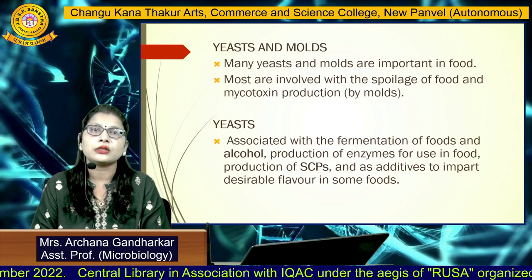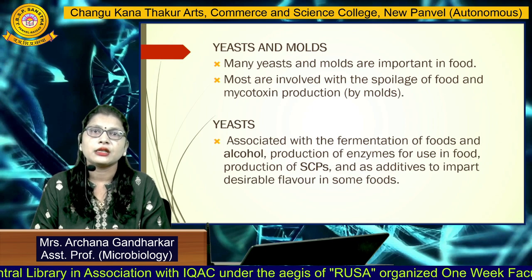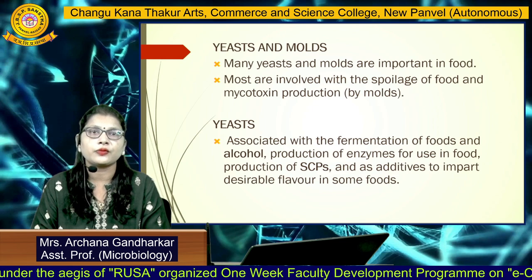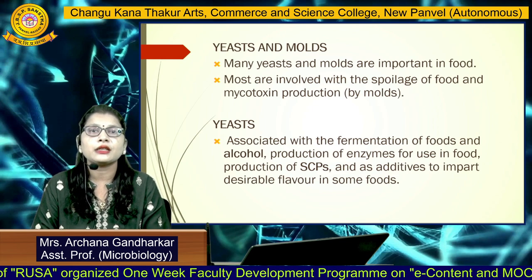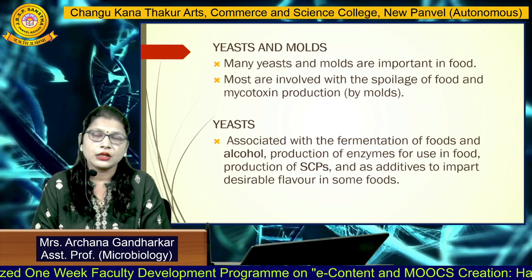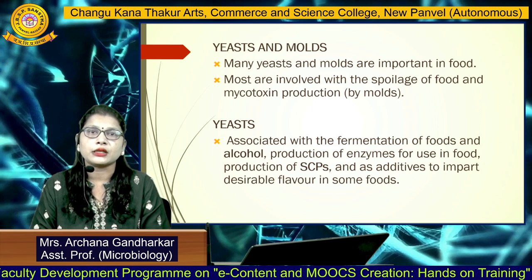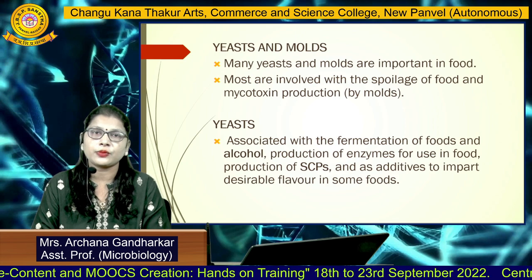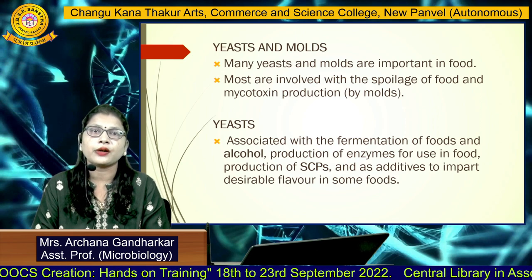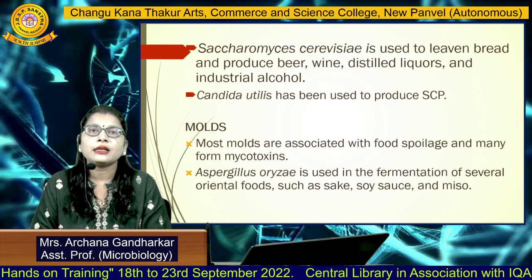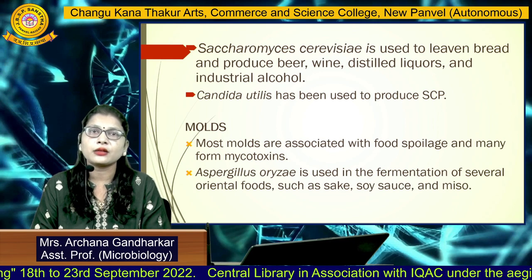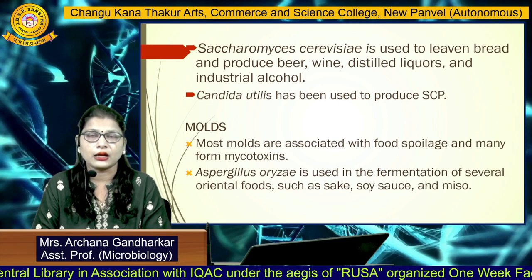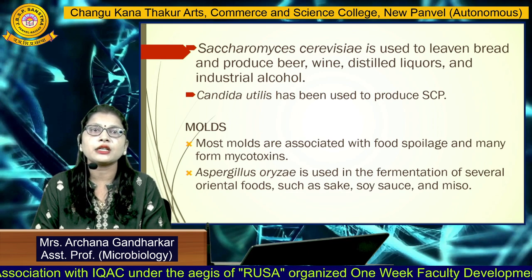Apart from bacteria, some yeasts and molds also act as starter cultures. Many yeasts and molds are important in food fermentation technology. Molds are associated with food spoilage as they can grow in any condition and produce toxins called mycotoxins. Yeasts are useful in fermentation of different foods such as alcohol and bakery products, as well as enzyme production and single cell protein (SCP) production. Yeasts are also used as additives to impart desirable flavor. For example, Saccharomyces cerevisiae is used in bakery products and in the production of beer, wine, distilled liquor, and industrial alcohol. Candida utilis is used for production of single cell protein.